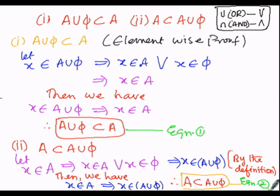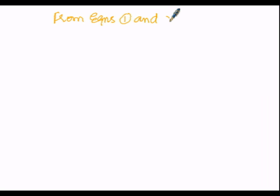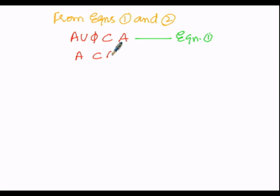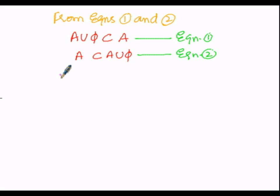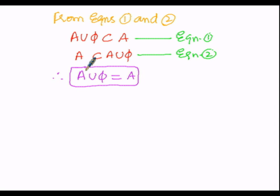From both conditions, equation 1 states A union φ is a subset of A, and equation 2 states A is a subset of A union φ. Since LHS is a subset of RHS and RHS is a subset of LHS, LHS and RHS must be equal. Therefore A union φ equals A, and we have proved the first identity law.